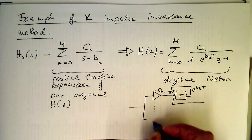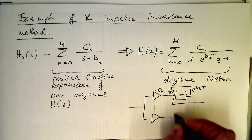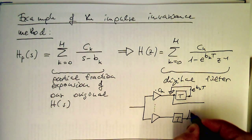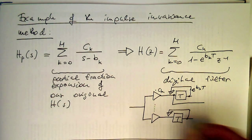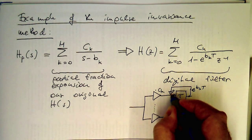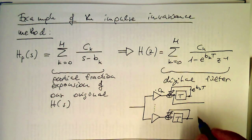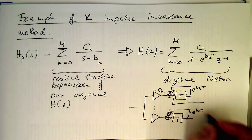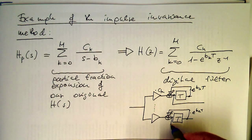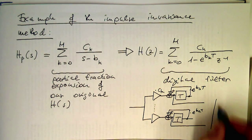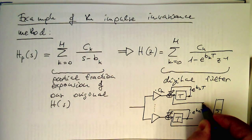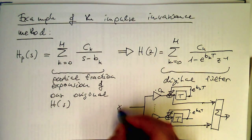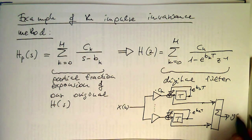We do this with all the C_K values. We add them up — I could also just draw a summation node — and so we multiply with another e^(B_K * T), generate an output, and then sum these up. So that's our input X of N, and that's Y of N.